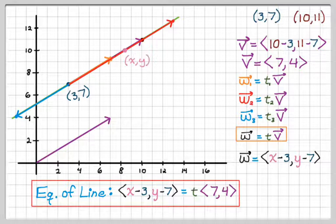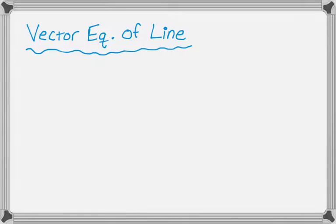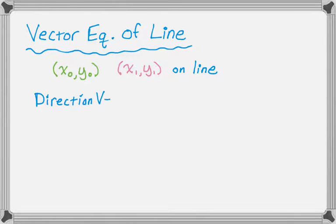So let's summarize that a little bit, and then we'll do an example. So vector of equation of the line. So let's say we know that the line itself goes through the points x0, y0, and x1, y1. So those are on the line. The first thing you're going to do is you're going to calculate something called the direction vector. So the direction vector is the vector that's between the two given points.